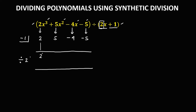Then 2 divided by 2, that's 1. Then multiply: positive 1 times negative 1, that's negative 1. Then add: positive 5 plus negative 1, that's positive 4. Then divide: positive 4 divided by 2, that's positive 2. Then multiply: positive 2 times negative 1, that's negative 2.